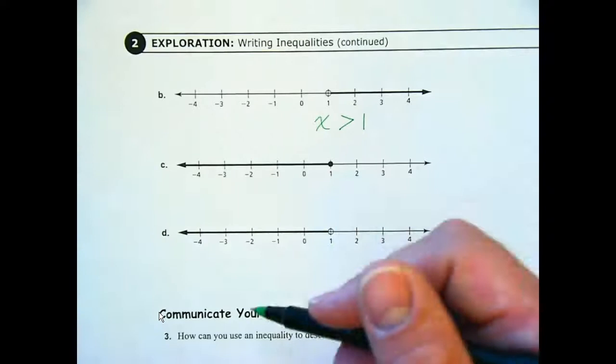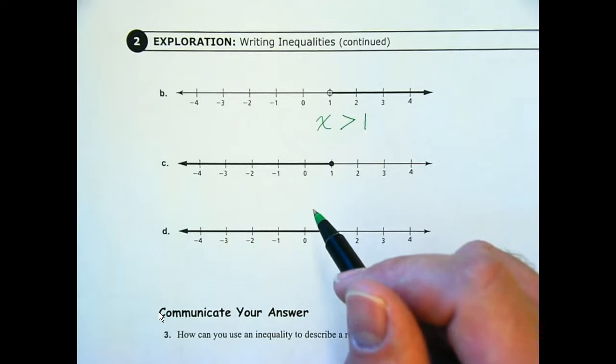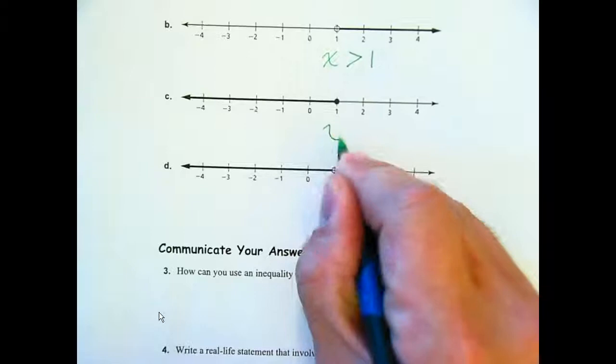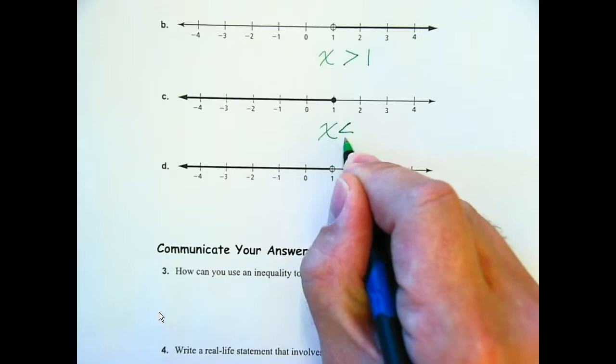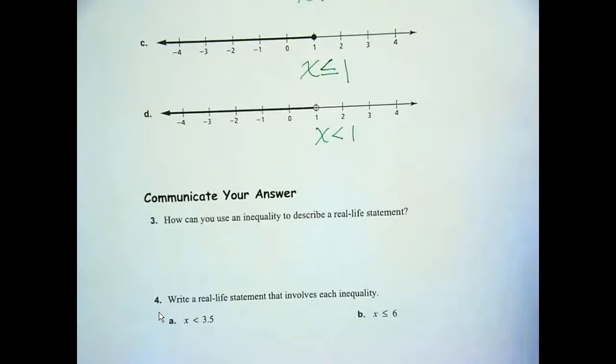It doesn't have the equal to. So, this is X is greater than one. All values that are bigger than one. Just not including one. Okay. So, it's like saying, hey, my stuff at the store costs a dollar one. One dollar and one penny. Do you have a buck? Sorry, man. You don't have enough. You're like bumming a penny from the person behind you. Hey, dude, you got a penny? Hey, dude, you got a penny? Hey, dude, you got a penny? All values that are greater than one. These are all values that are less than or equal to one. And these are all values that are less than. Okay. Very good.